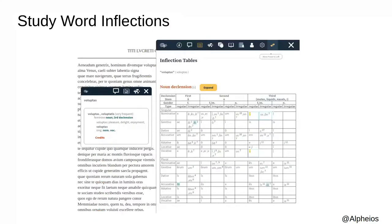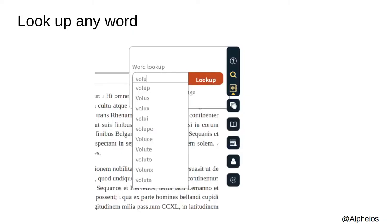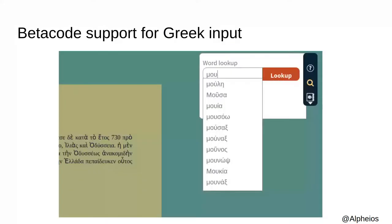Clicking the Inflect icon will bring up inflection tables focused on the matching inflections. You can also look up any word you choose, whether or not it appears on the page, by clicking the Lookup icon from the toolbar and entering the word. The new Autocomplete functionality is provided by the Logion service from Helma Dick at the University of Chicago. If you are working in Greek, you can now type the input in beta code, and it will be converted to Unicode as you type.